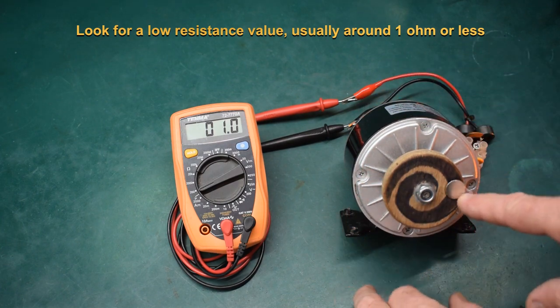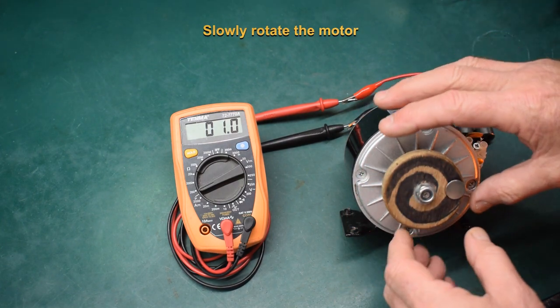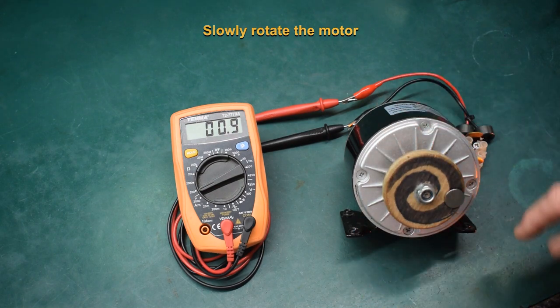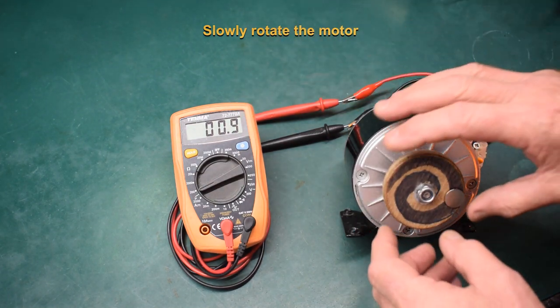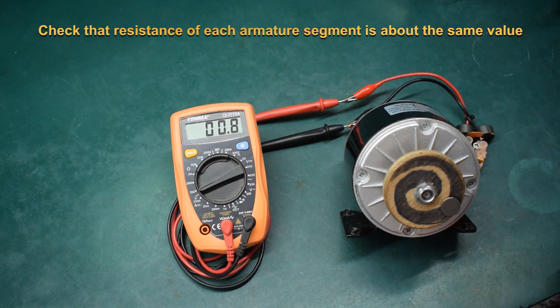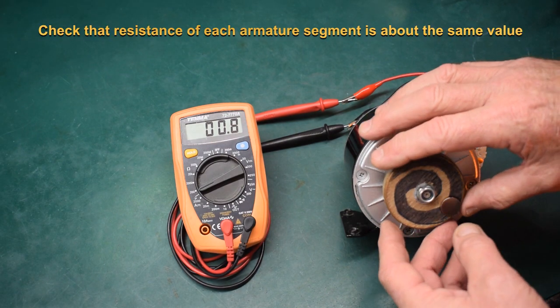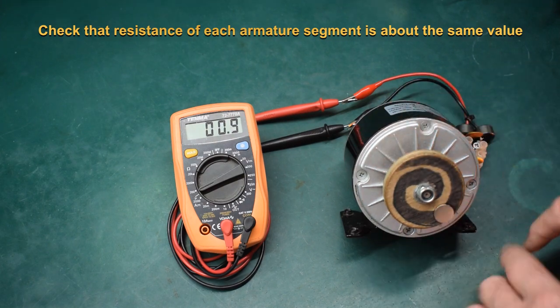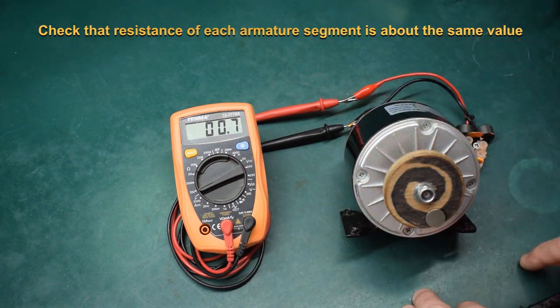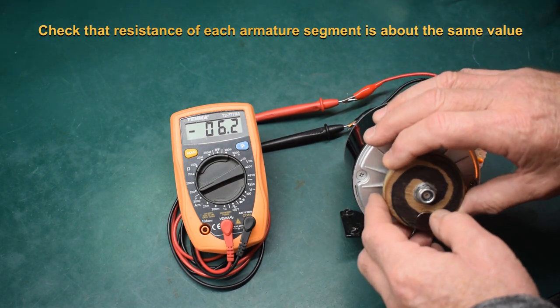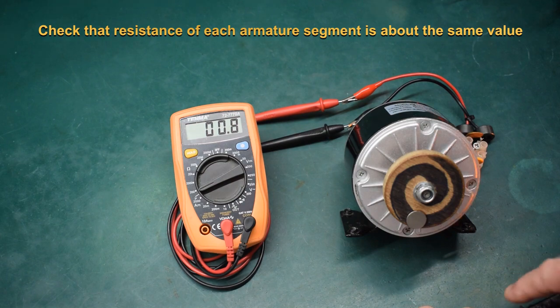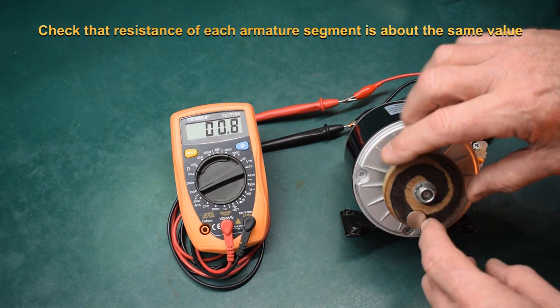Now what we're going to do is rotate the motor around, do it very slowly and look for the resistance of each segment of the armature. You can feel the armature moves in small notches and you can see that each time we're getting a reading of about just under an ohm. We're going to walk the armature all the way around.